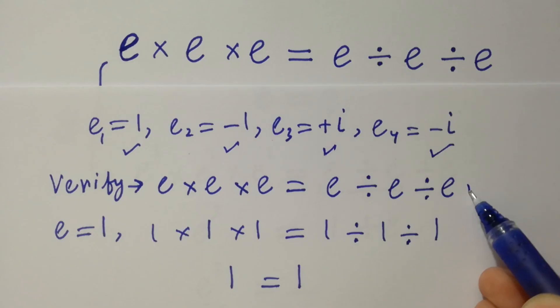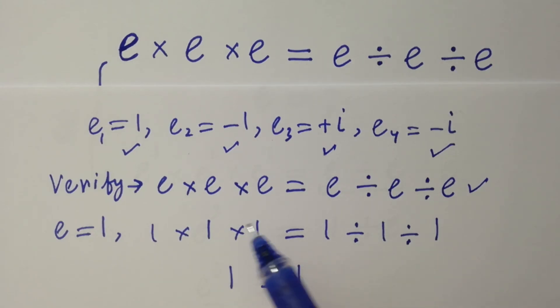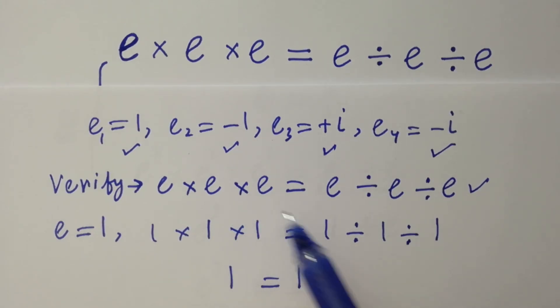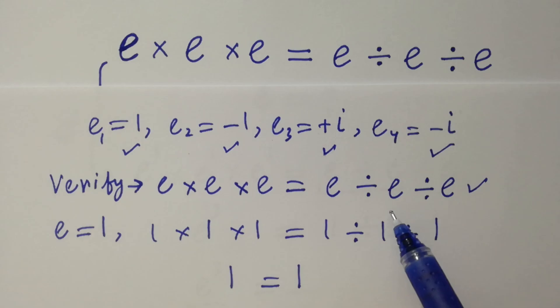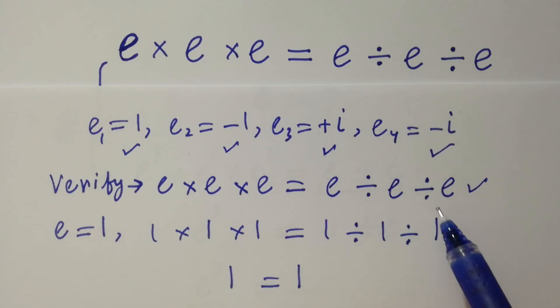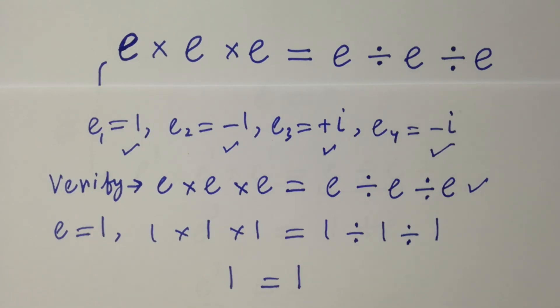This shows that all four values — e1 equals 1, e2 equals minus 1, e3 equals plus i, and e4 equals minus i — satisfy the equation e times e times e equals e divided by e divided by e. Thanks for watching this video. Please subscribe to this channel to get notifications of new videos. Bye.